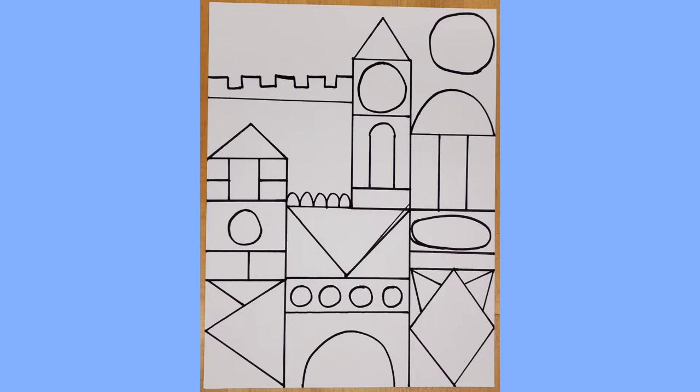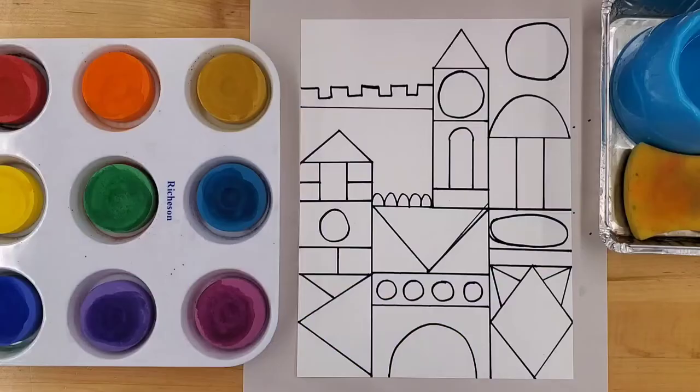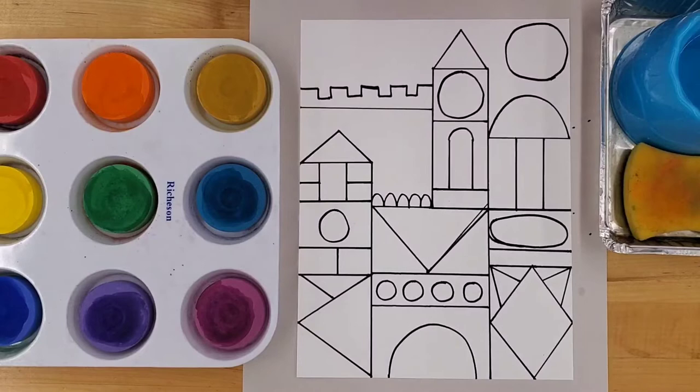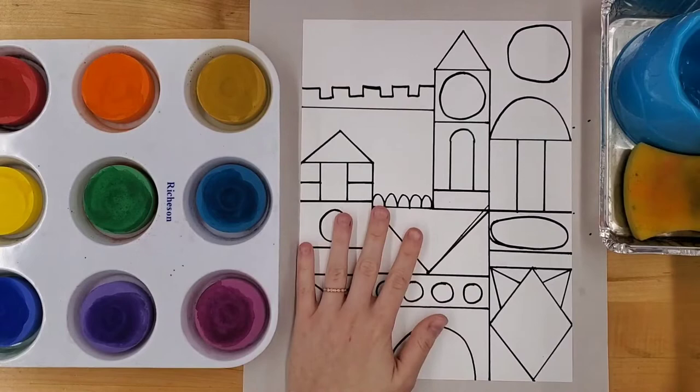Welcome back to day two of the Paul Klee Shape Cityscape. We will be painting our shapes using tempera cakes. Similar to watercolor palettes, you have to wake up the paint with a wet paintbrush.